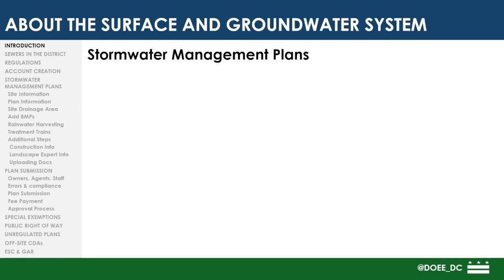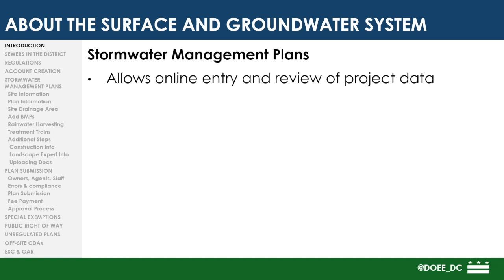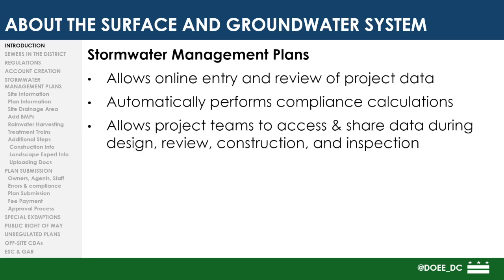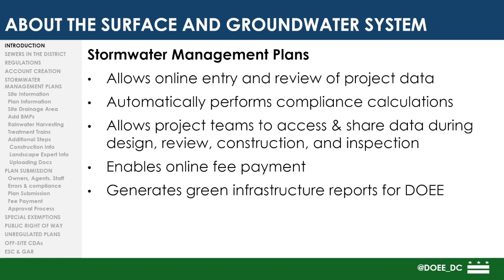First, let's briefly talk about what the SGS does. One of the main functions of the SGS is to facilitate the submission of stormwater management plans. The SGS allows online entry and review of project data, automatically performs compliance calculations, allows project teams to access data during design, review, construction, and inspection phases, enables online fee payment, and generates green infrastructure reports for DOEE.